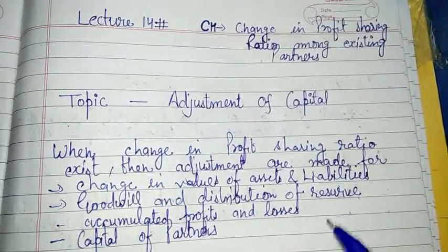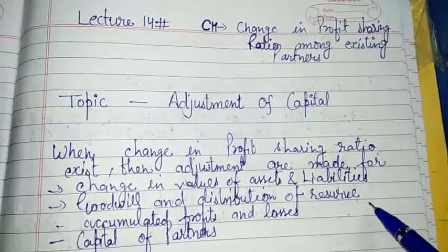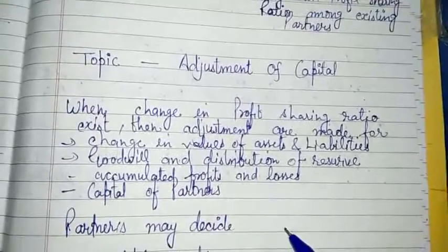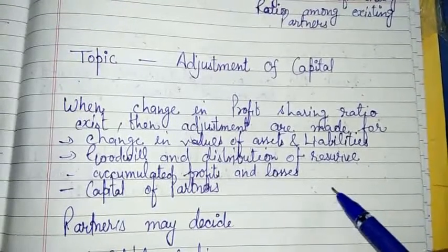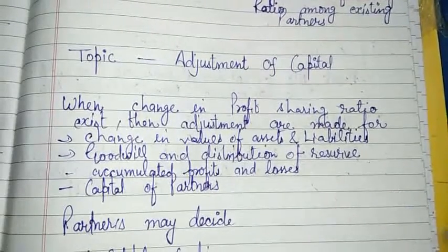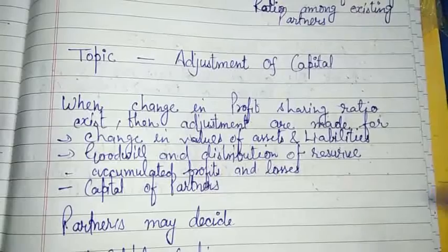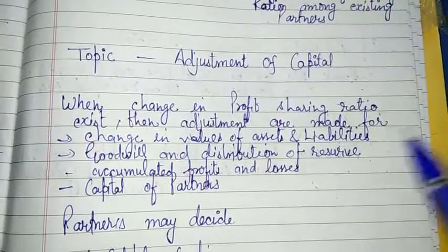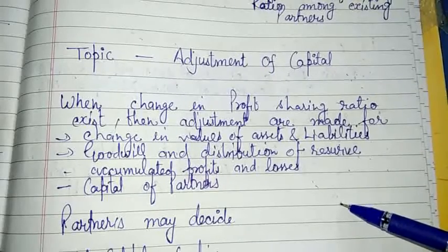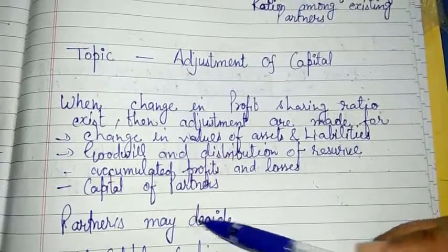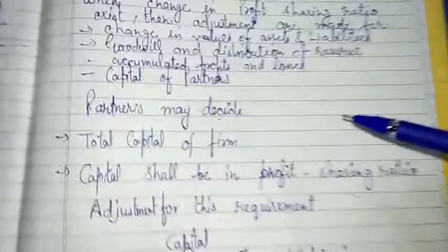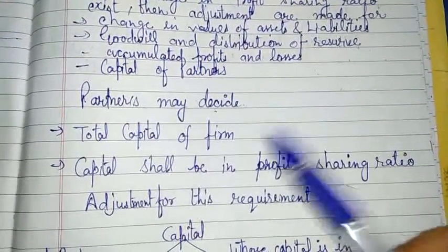We have to adjust all these items — goodwill, reserves, revaluation — through the partners' capital account. That is why we need to make some adjustments to the capital account of the partners. The partnership firm decides this because the firm's investment relates to the total capital of the firm.